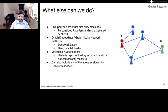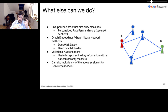Beyond GRAIL, there are other approaches. We have unsupervised structural similarity measures like personalized page rank, which will be covered in the next section. There are more advanced techniques like graph embeddings and graph neural network methods such as DeepWalk and DeepGraphInfoMax. Another alternative approach is unsupervised representation learning methods like various autoencoders. You can also take any of these and use them as inputs to GRAIL-style models, which is an interesting combination.